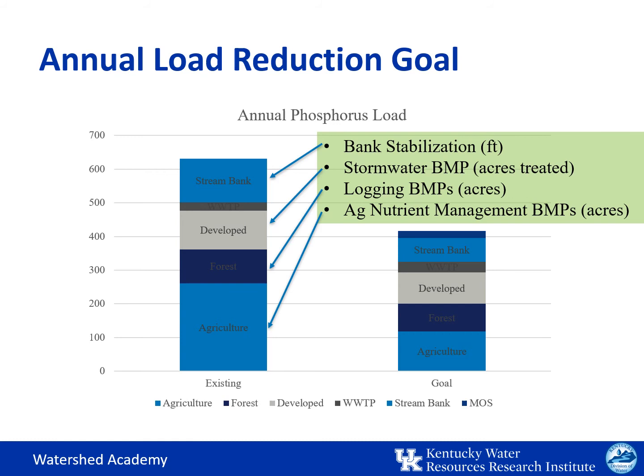Stream bank stabilization can reduce phosphorus loading from phosphorus attached to eroded soils. Using literature values, you can make some approximations of how many eroding feet of stream bank will need to be addressed. Stormwater BMPs, such as rain gardens, pervious pavement, or streetscaping on developed land, can enhance stormwater absorption before runoff reaches the stream, and the number of acres that would need to be captured can be calculated. Logging BMPs can reduce soil-related phosphorus loading by minimizing erosion potential, and agricultural nutrient management can help keep needed phosphorus on cropland and reduce unneeded phosphorus fertilizer application. Literature references can be consulted to estimate the type of reductions for a given BMP.